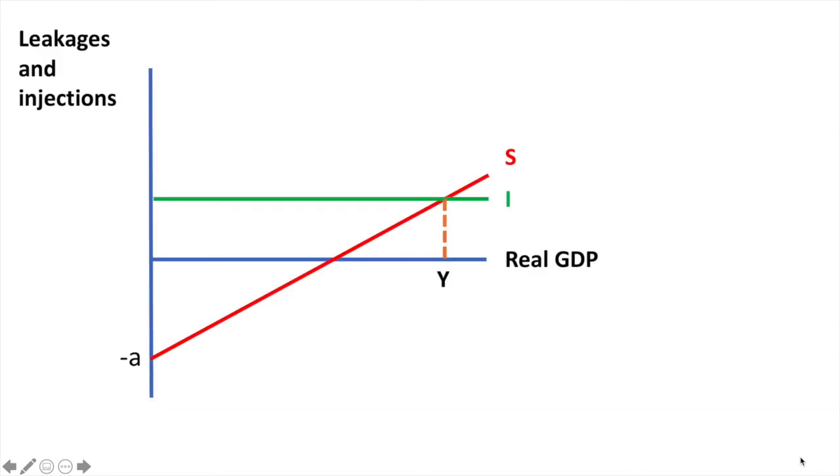Your starting point should be this diagram of the closed two sector economy. We know that savings has increased at each and every level of real national income or real GDP. Let's see what impact this will have. The leakages line will shift upwards to S1 and this results in a lower equilibrium real national income represented here by Y1. Did you get this one right? If not, work through it again and see what went wrong.